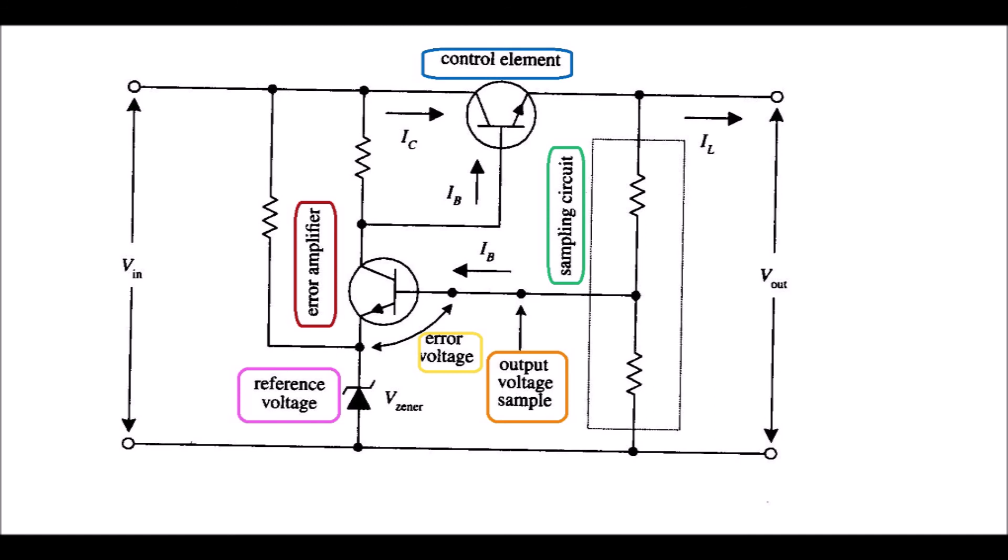The error amplifier compares output sample voltage with the reference voltage and then creates an error voltage if there is a difference between the two. Then, the error amplifier's output is sent to the current control element which is a transistor. This transistor is used to control load current.